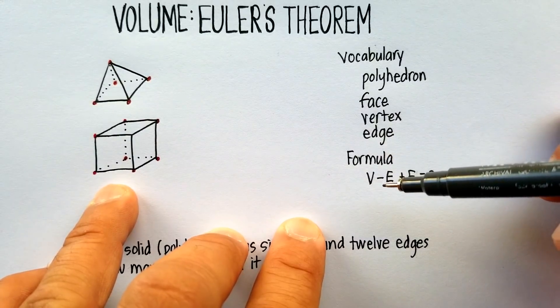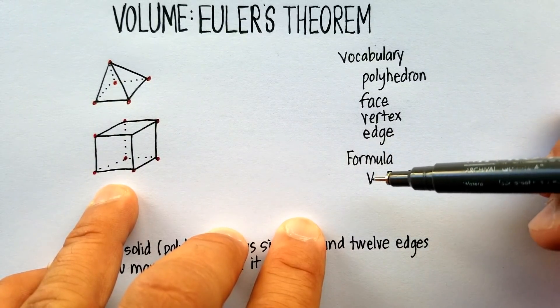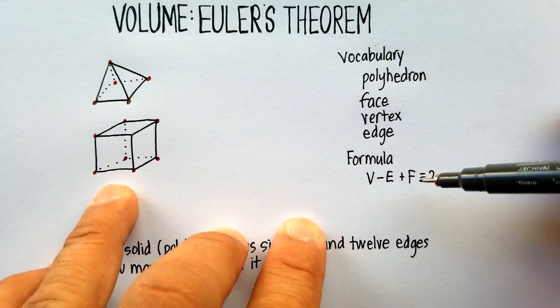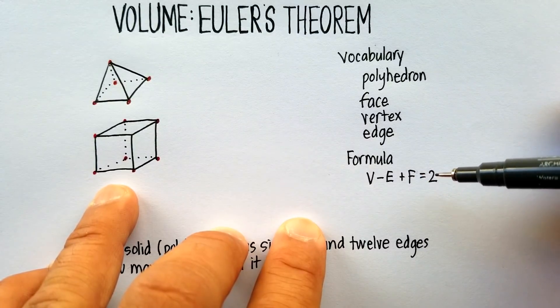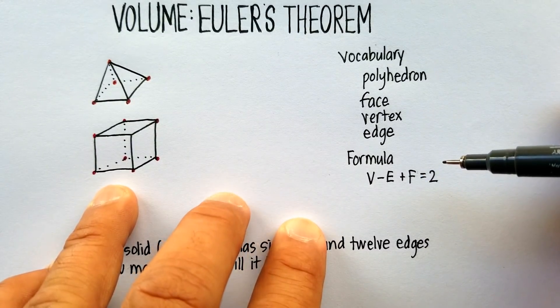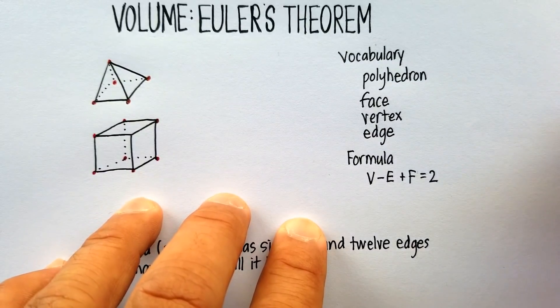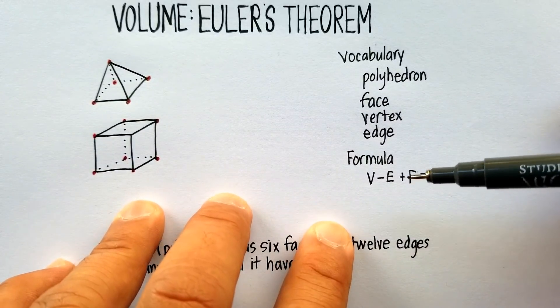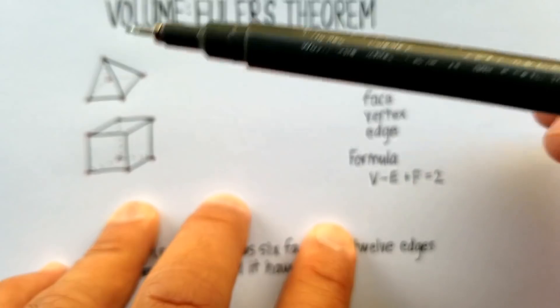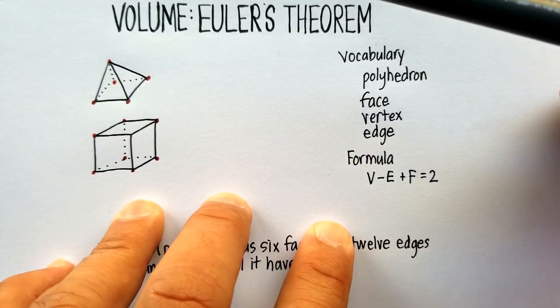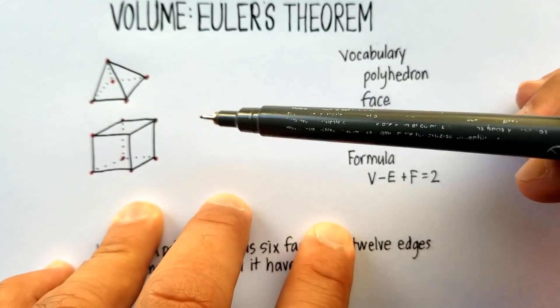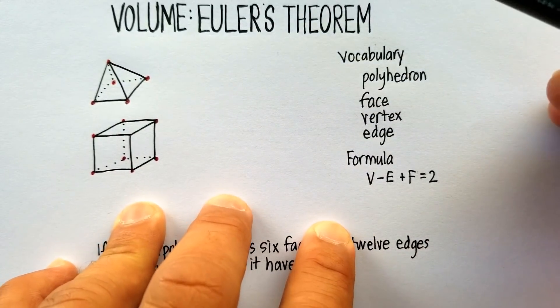And then Euler's Formula itself, which is V minus E plus F will always equal two, which is an amazing formula when you think about it. That all solid polyhedrons will actually have this formula attached. And this is useful because electricians use it quite a bit, or plumbers will use it quite a bit when they're building plumbing in houses and in buildings.